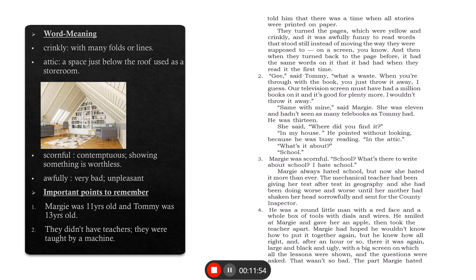Coming to the fourth paragraph. He was a round little man with a red face and a whole box of tools with dials and wires. This is the description of the county inspector, how the man looks like. Thankfully it is not a machine, it is a man. He was a round little man with a red face and a whole box of tools with dials and wires. Why is he carrying dials and wires? Because he is now going to correct the machine, the electronic machine which used to teach Margie. He smiled at Margie and gave her an apple, then took the teacher apart.